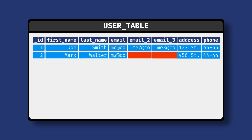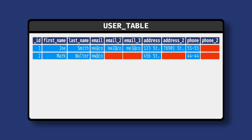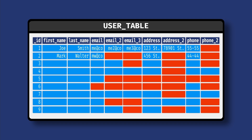Now let's add another record. This one only has one email address, so the second and third columns are going to be blank. We'll have the same issues with adding multiple physical addresses and phone numbers. Then let's add some more records. You can see how this is getting out of control quickly. The database is getting bloated with these empty fields.